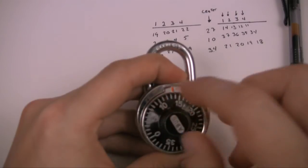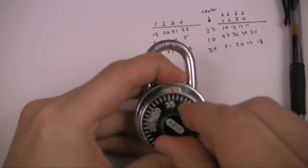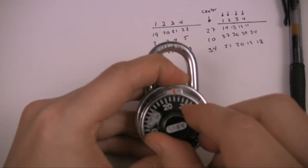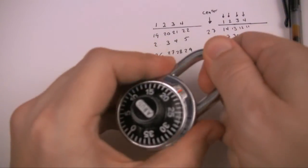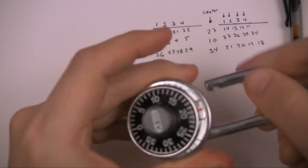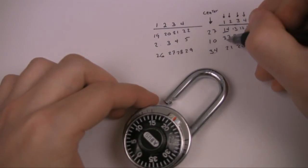Counterclockwise past the number and then back to it, just as normal, to 37, and we go to 21. Does it work? Doesn't work. Let's try one number, 20. Pops right open. So there's our combination: 14, 37, 20.